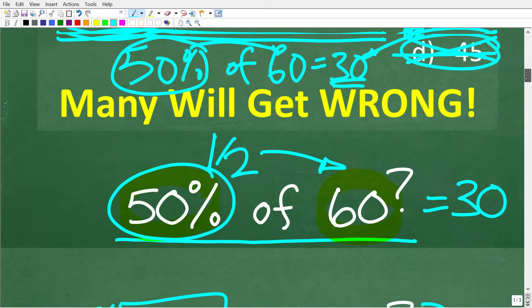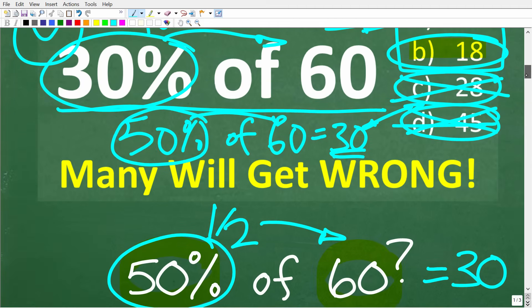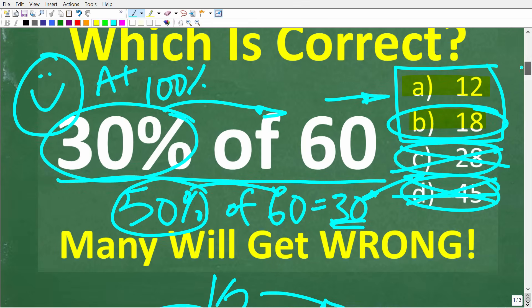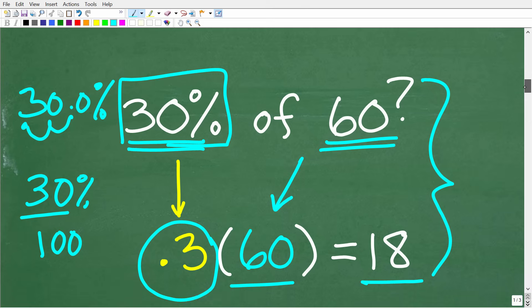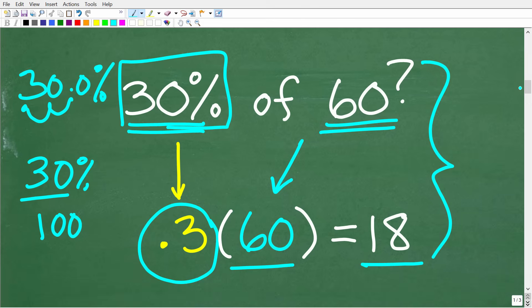All right. So this is how we would get the right answer using a calculator. And this is how we would get the right answer, just kind of using some common sense. And of course, we would have to get lucky because I didn't show you how we could find the answer given these two choices right here. But certainly choice C and D are not really plausible answers. All right. So how do we find 30% of 60 without using a calculator? Well, let's take a look at that right now.